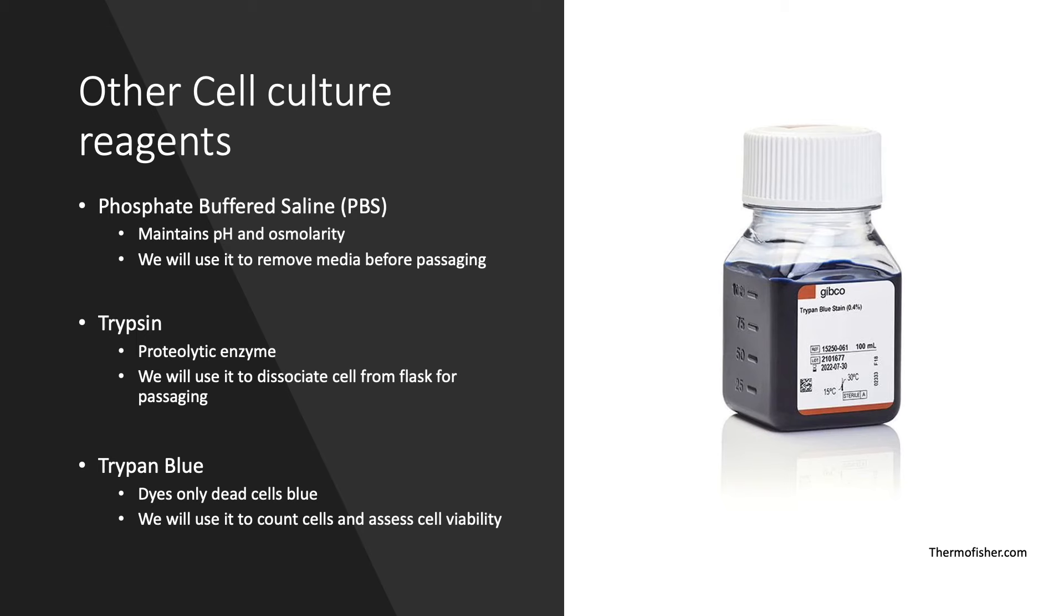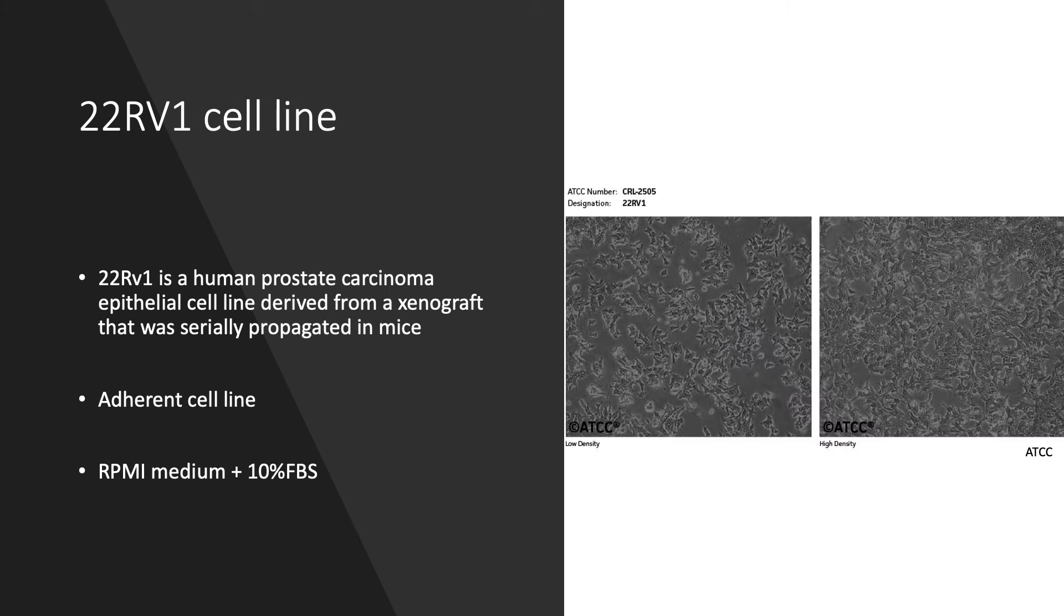If you refer back to your manual, you will see that there are three human cancer cell lines that are mentioned. For today's and any upcoming videos, we will be working with a different cell line called 22RV1. This is an adherent cell line derived from a human prostate carcinoma that preferentially grows in RPMI media supplemented with 10% FBS.